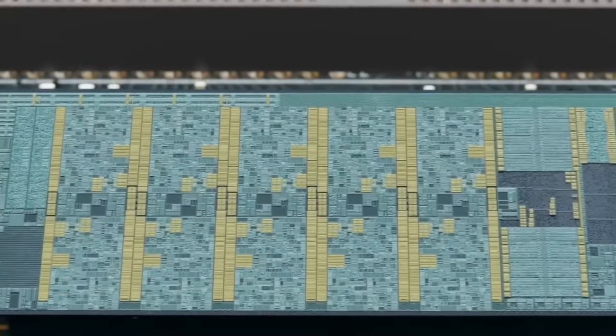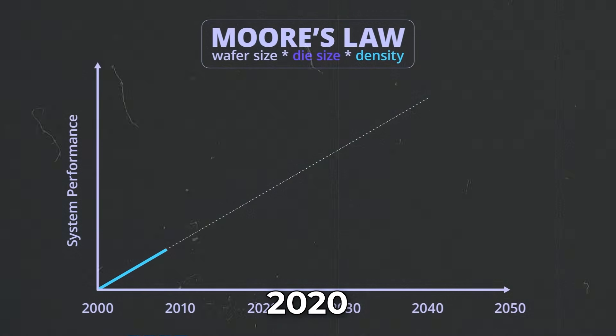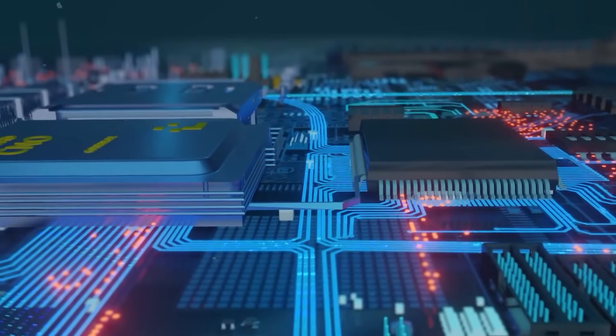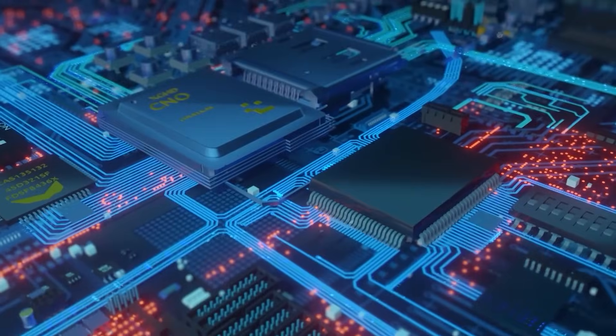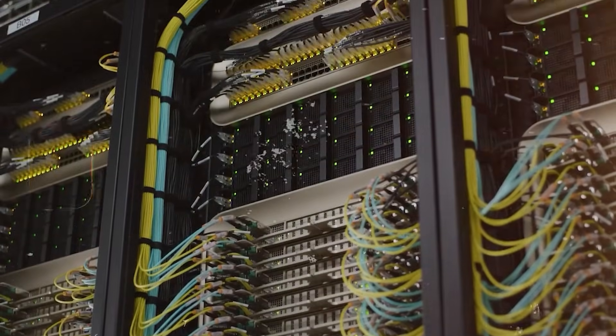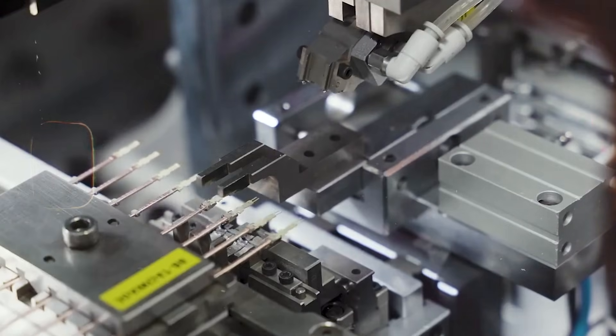The next leap may require stacking more layers or mixing different materials. Around 2020, shrinking transistors became painfully hard. The heat rose. Costs exploded. The old version of Moore's law collapsed. Now performance must come from the whole system, not just smaller transistors.